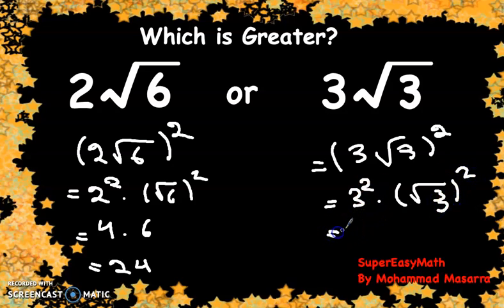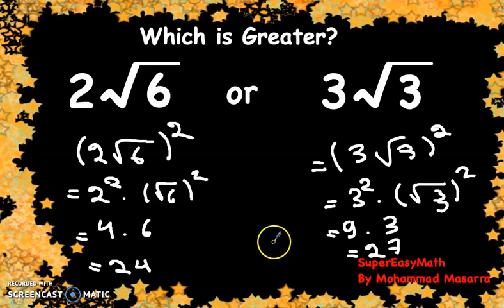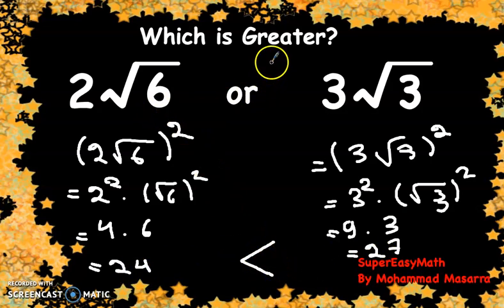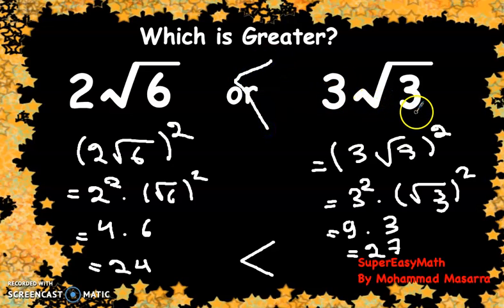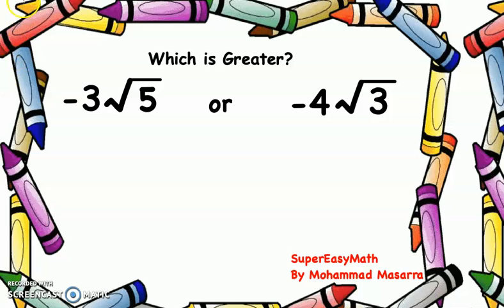3² is equal to 9, times 3, equal to 27. We know that 24 is smaller than 27, so 2√6 is smaller than 3√3. Now for another example — this time with two negative numbers.